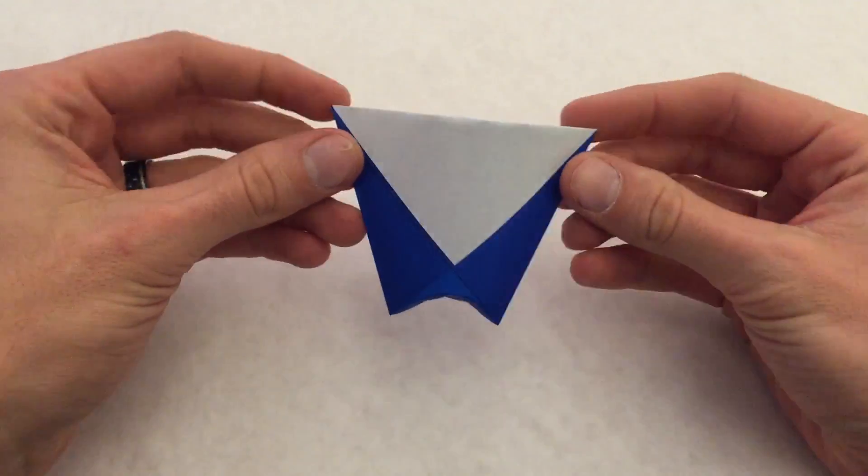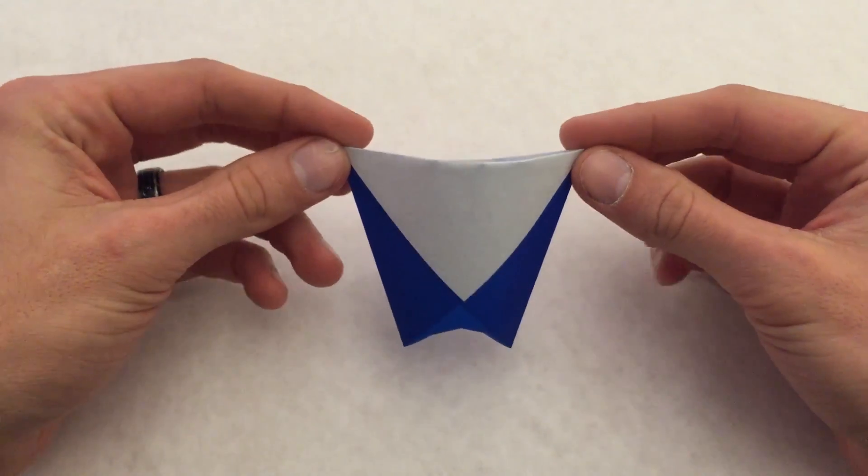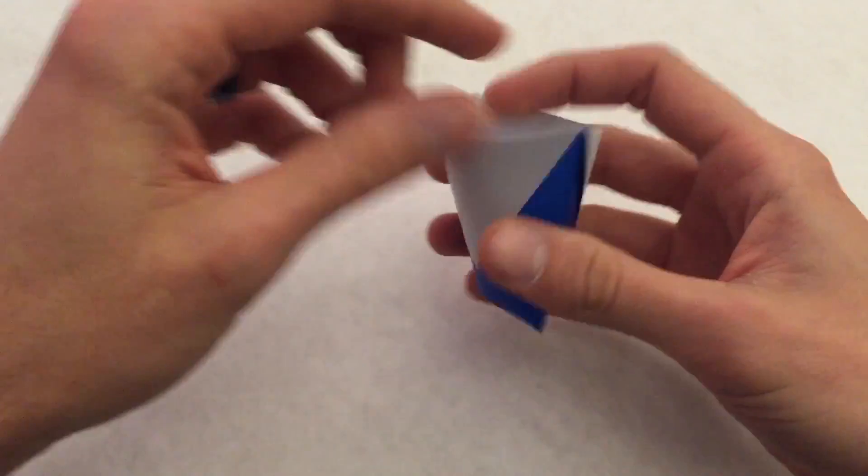Hi everyone! Today I'll be teaching you how to fold an origami drinking cup. It's a traditional model and I'll be using a six inch sheet of Kami.